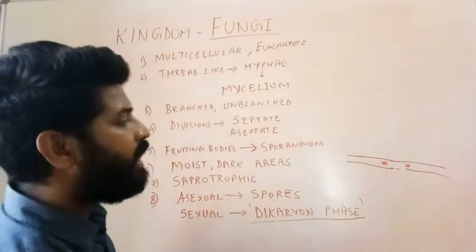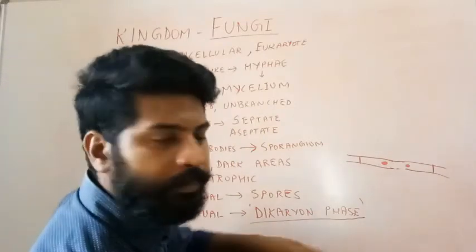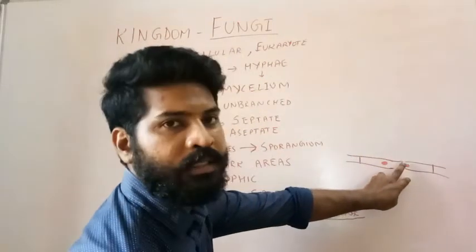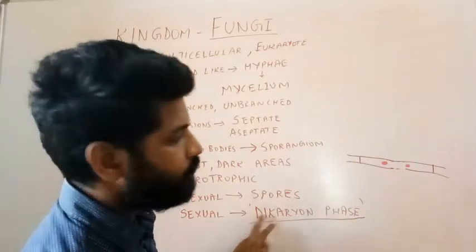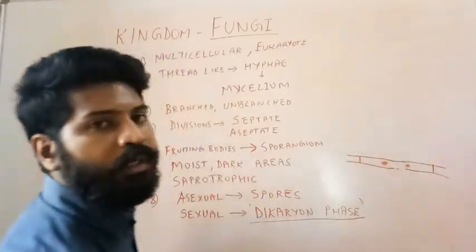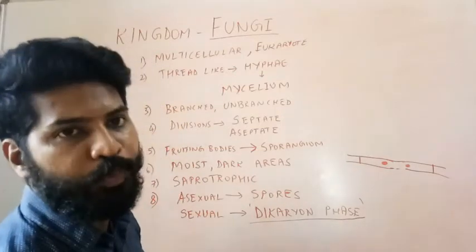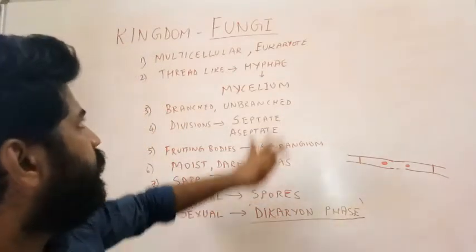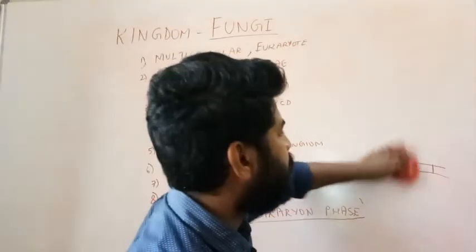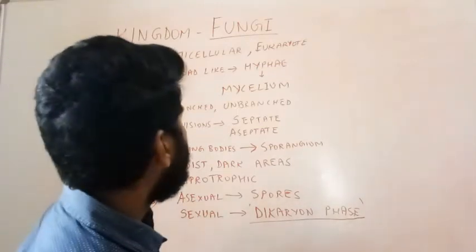In the dikaryon phase, two mycelia with their nuclei come together and fuse. The cell wall is managed with the help of enzymes. A single cell then contains two nuclei — this is called the dikaryon phase. Later the two nuclei fuse to produce the zygote, which undergoes meiosis and then produces spores. That is the speciality of fungal sexual reproduction.